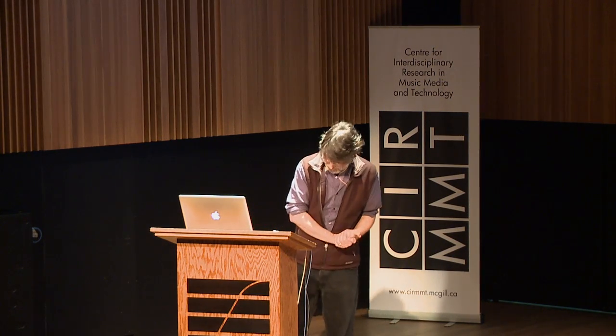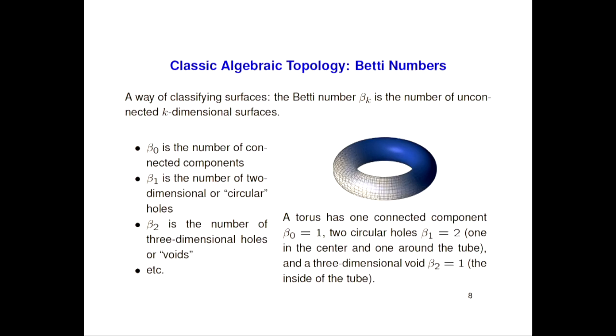The question then becomes: can we show that these things that we know exist in the musical realm are there in our data? The answer is yes. The main tool I'm using here to look at the topological structure of our clouds of data points is Betti numbers. Betti numbers are one way that topologists talk about the shape of spaces — not the only way, but one of the major ways.